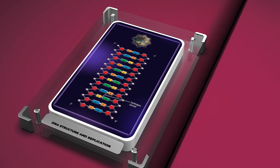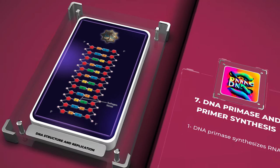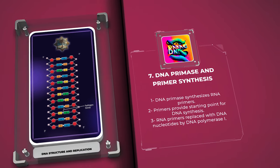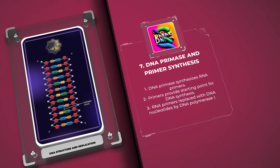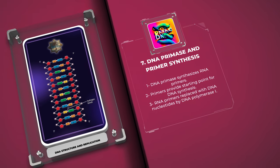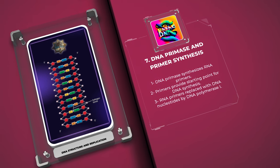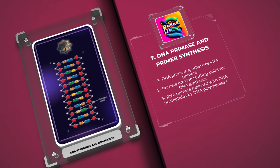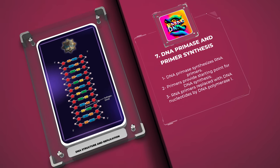DNA primase plays a crucial role in DNA replication by synthesizing short RNA primers. These primers provide a starting point for DNA polymerases to commence DNA synthesis. DNA primase initiates primer synthesis by adding RNA nucleotides through complementary base pairing. The RNA primers are later replaced with DNA nucleotides by DNA polymerase I, ensuring the continuity of the new DNA strand.